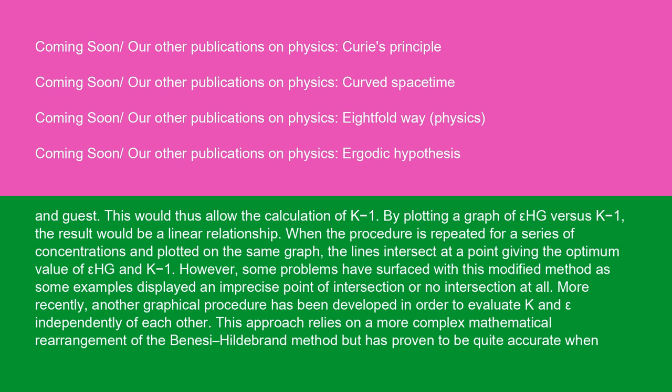This would thus allow the calculation of K inverse. By plotting a graph of epsilon HG versus K inverse, the result would be a linear relationship. When the procedure is repeated for a series of concentrations and plotted on the same graph, the lines intersect at a point giving the optimum value of epsilon HG and K inverse. However, some problems have surfaced with this modified method as some examples displayed an imprecise point of intersection or no intersection at all. More recently, another graphical procedure has been developed in order to evaluate K and epsilon independently of each other. This approach relies on a more complex mathematical rearrangement of the Benesi-Hildebrand method but has proven to be quite accurate when compared to standard values.